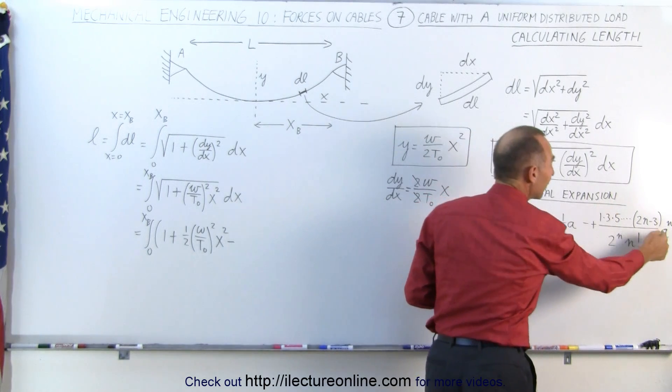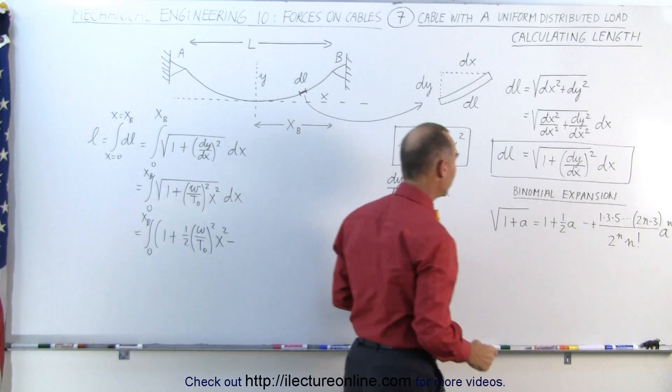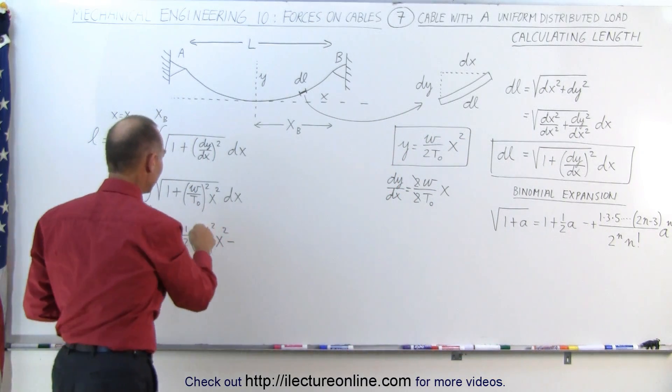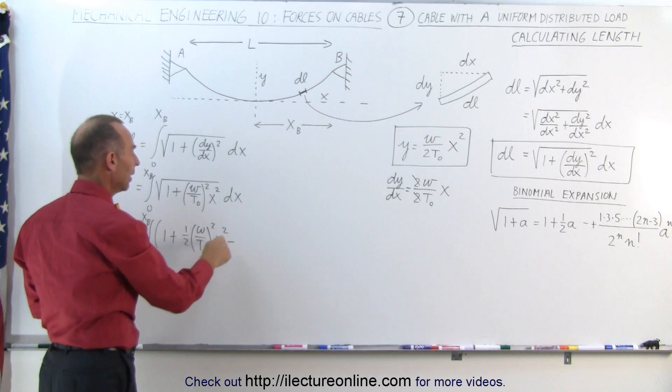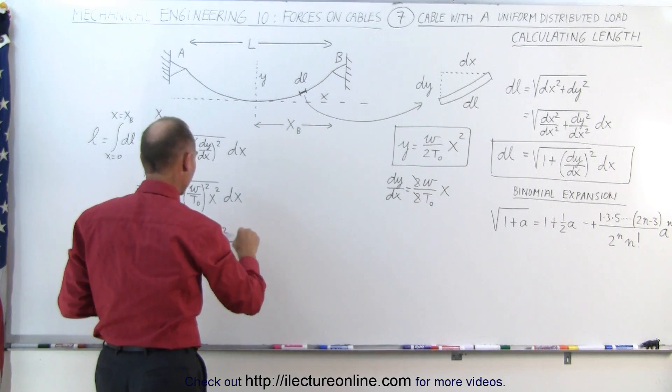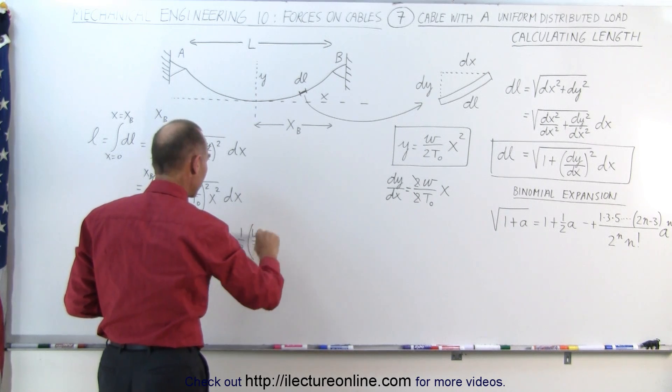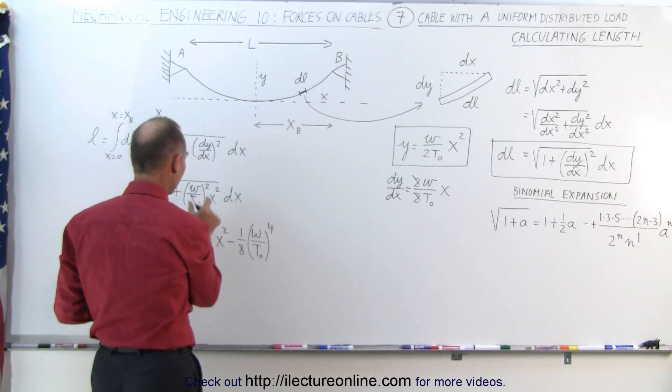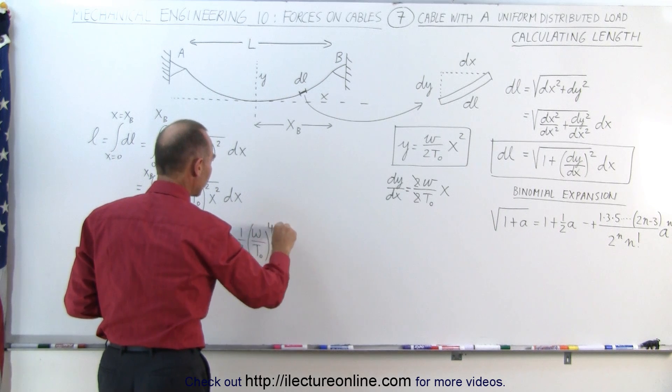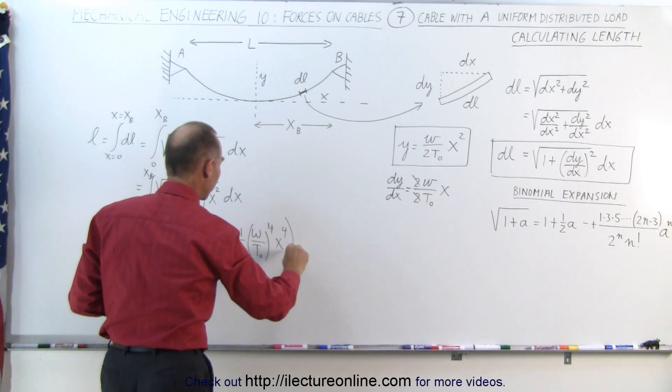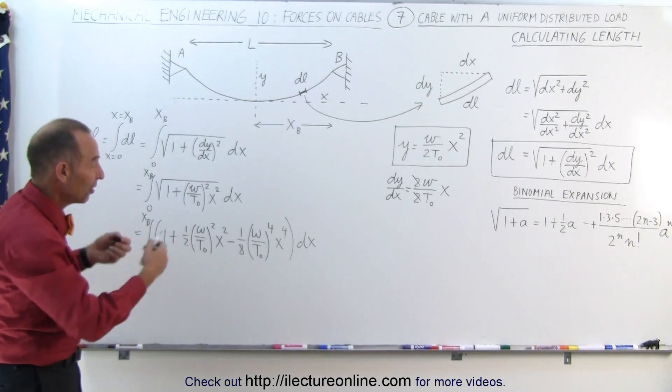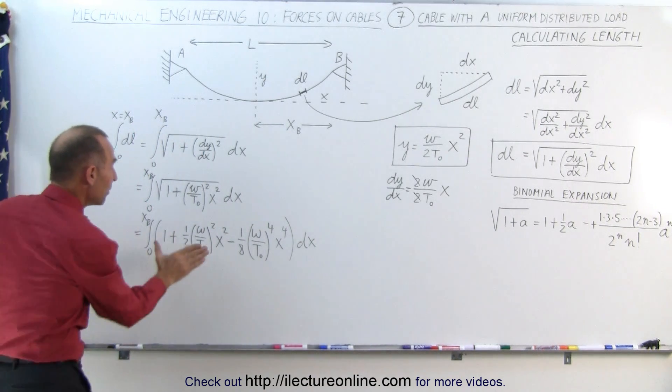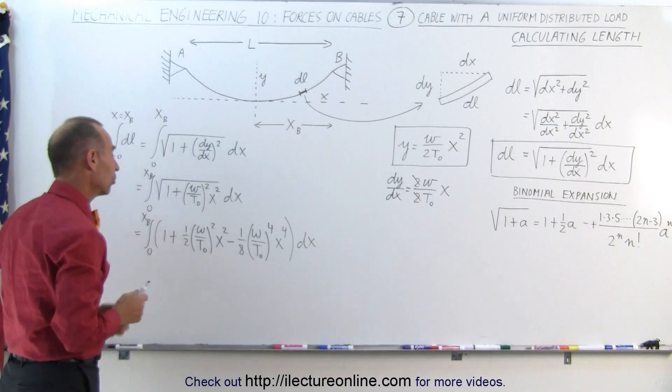So we get 1/8 times a to the second power. And of course, again, a is this quantity right here. So that would be this quantity to the second power, and then minus 1/8 in front of it. Minus 1/8 times (omega/T sub naught) quantity to the fourth power now, because it's this quantity squared, times X to the fourth power, and this whole thing times DX. So now we have three terms, just so you can see how it works. Typically, it may be sufficient just to consider the two terms alone.